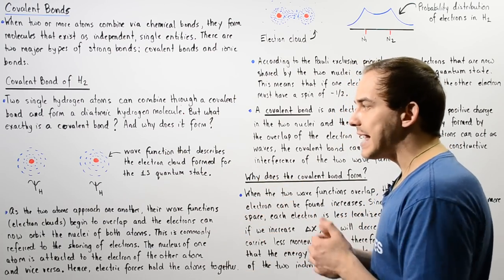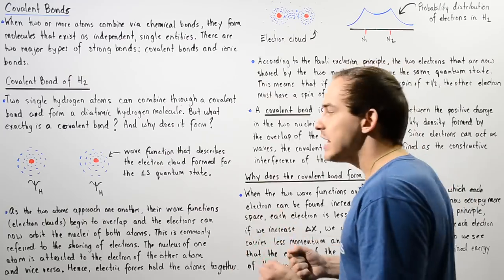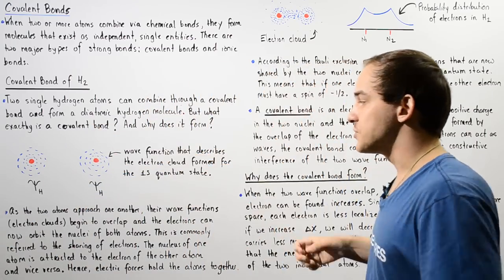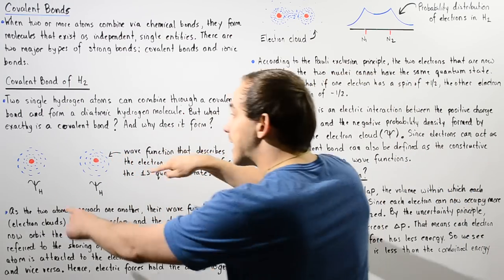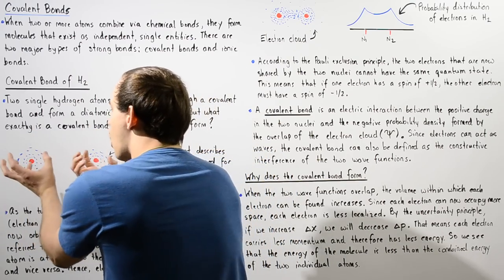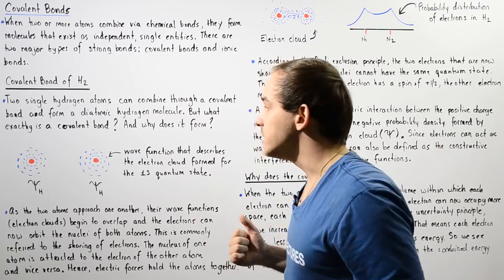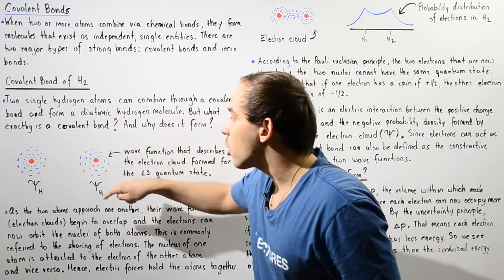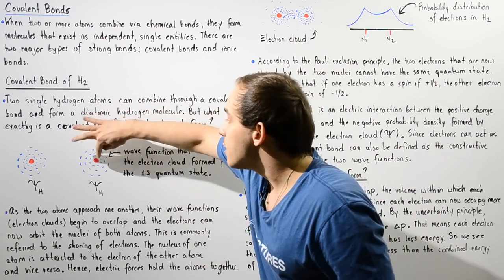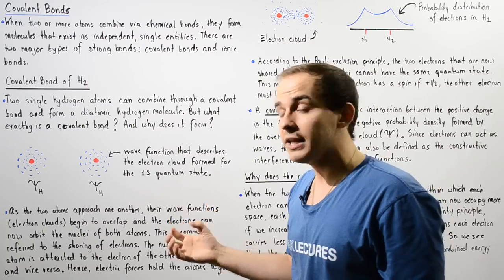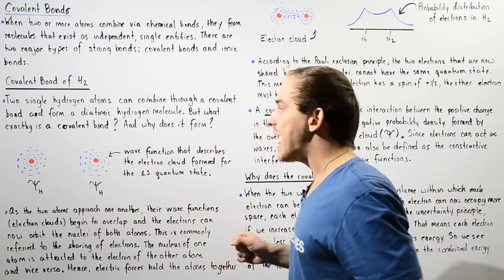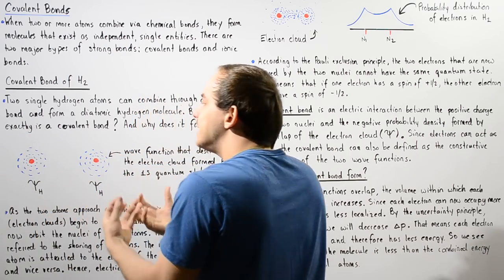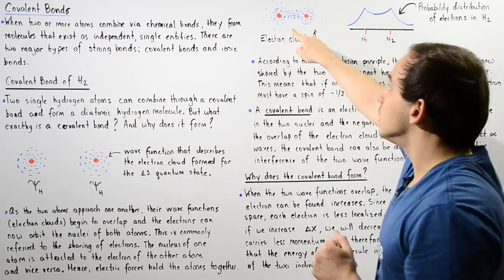The probability density describes the probability of finding our electron within some region around the nucleus of the atom, where the nucleus is given by the red dot. We have a proton with a positive charge inside the nucleus, and the electron occupies the orbital given by our wave function — the electron cloud formed for the 1s quantum state, the ground state of the hydrogen atom. Before the covalent bond is formed, we have two individual hydrogen atoms separated by some distance. As the two atoms begin to approach one another, their wave functions or electron clouds begin to overlap.